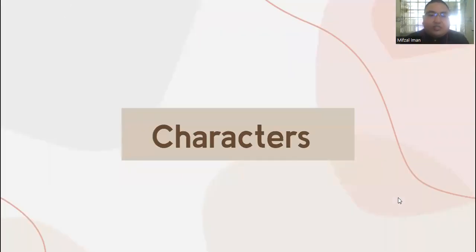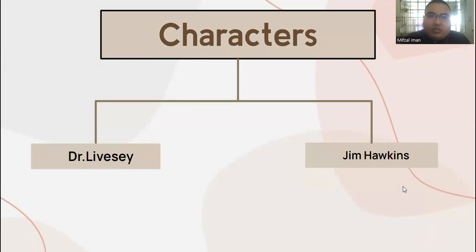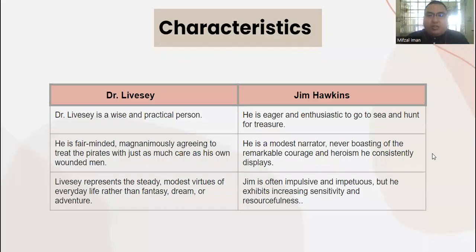The first character is Jim Hawkins — a young boy, the son of an innkeeper near Bristol. He is the young protagonist and narrator of Treasure Island. The second character is Dr. David Livesey, the local doctor and district magistrate. I will now hand the presentation over to Alif Ifan for the characteristics.